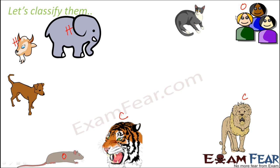Human beings are the best example of omnivores because they eat both plants and animals. Cats are carnivores — about 90 percent of their nutrition comes from meat, though they may eat a little bit of plant parts here and there.